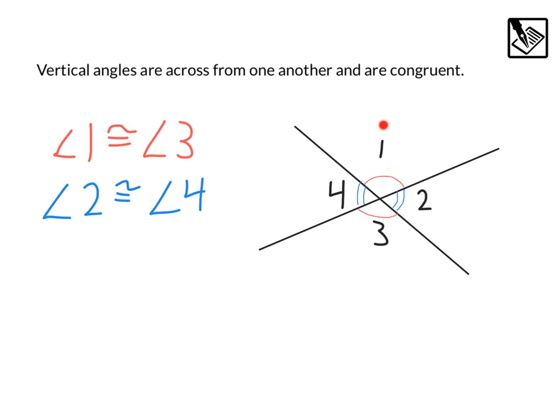So angle 1 and angle 3 are vertical angles and congruent. Angle 2 and angle 4 are also vertical angles, also congruent. This symbol right here, an equal sign with the squiggly above it, represents things being congruent, or exactly the same.